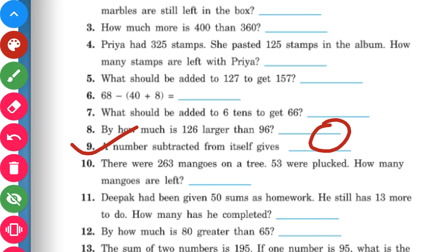Question number 10: there were 263 mangoes on a tree; 53 were plucked. How many mangoes are left? This question you will do yourself. Don't forget to write a statement as well.